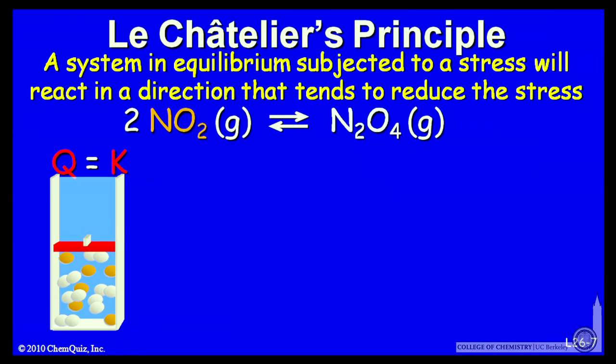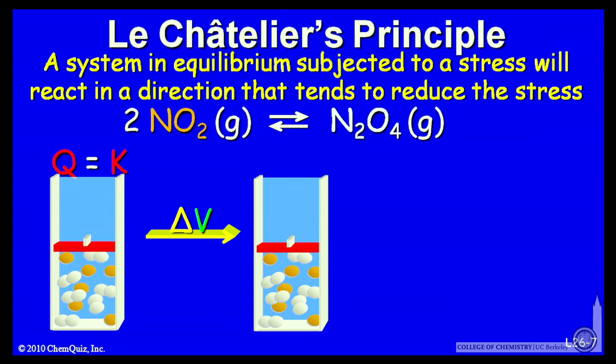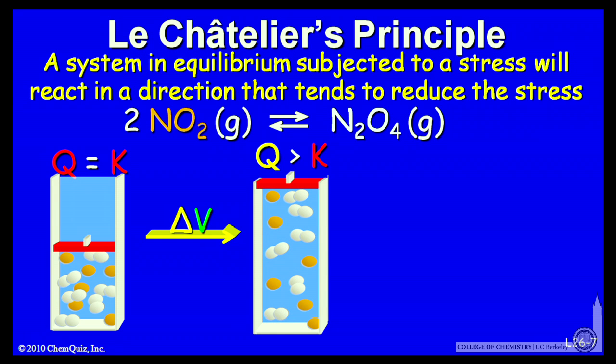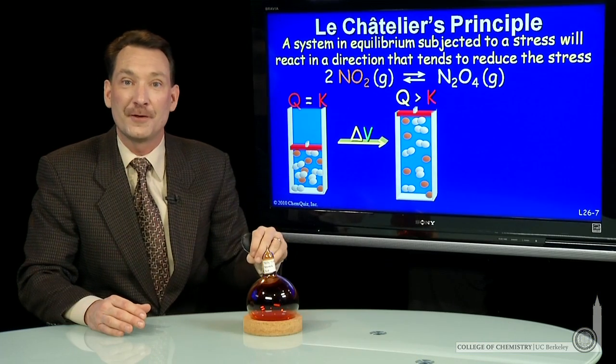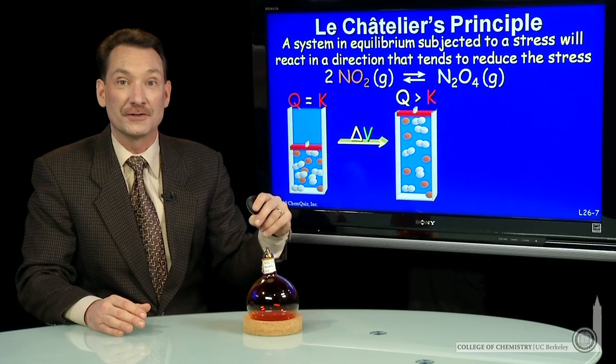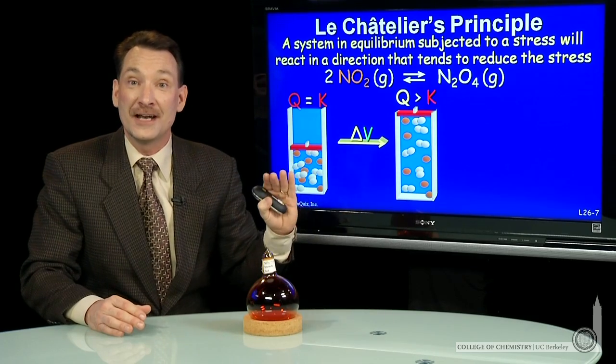If you double the volume, so increase the volume suddenly, the partial pressures will fall by a factor of 2, twice the volume, half the pressure. Same number of particles. But now it's not at equilibrium anymore.